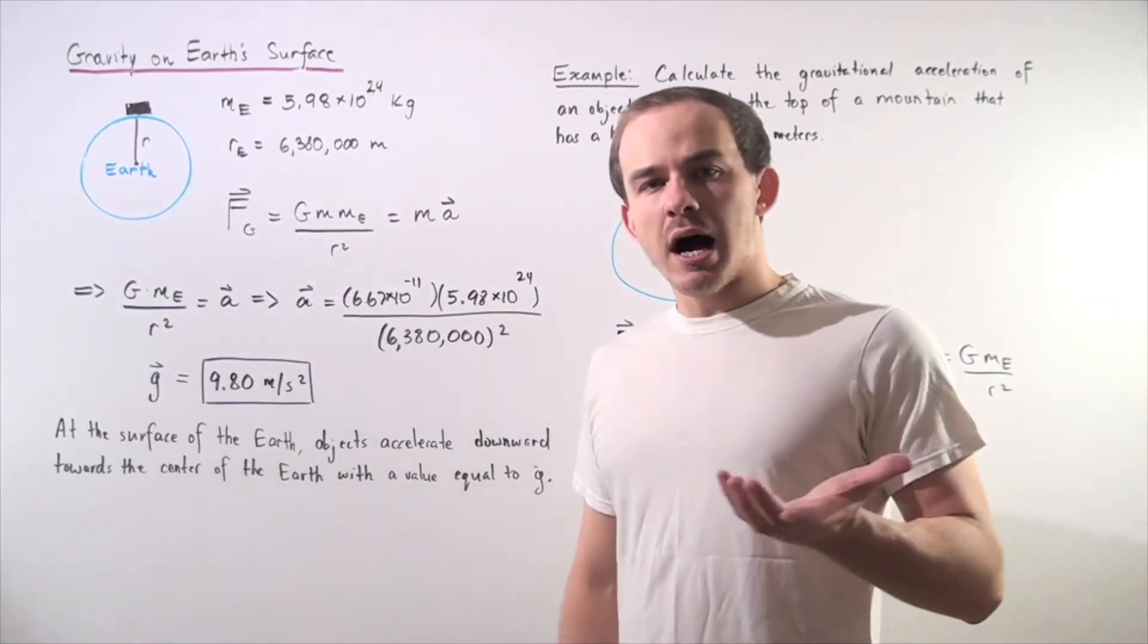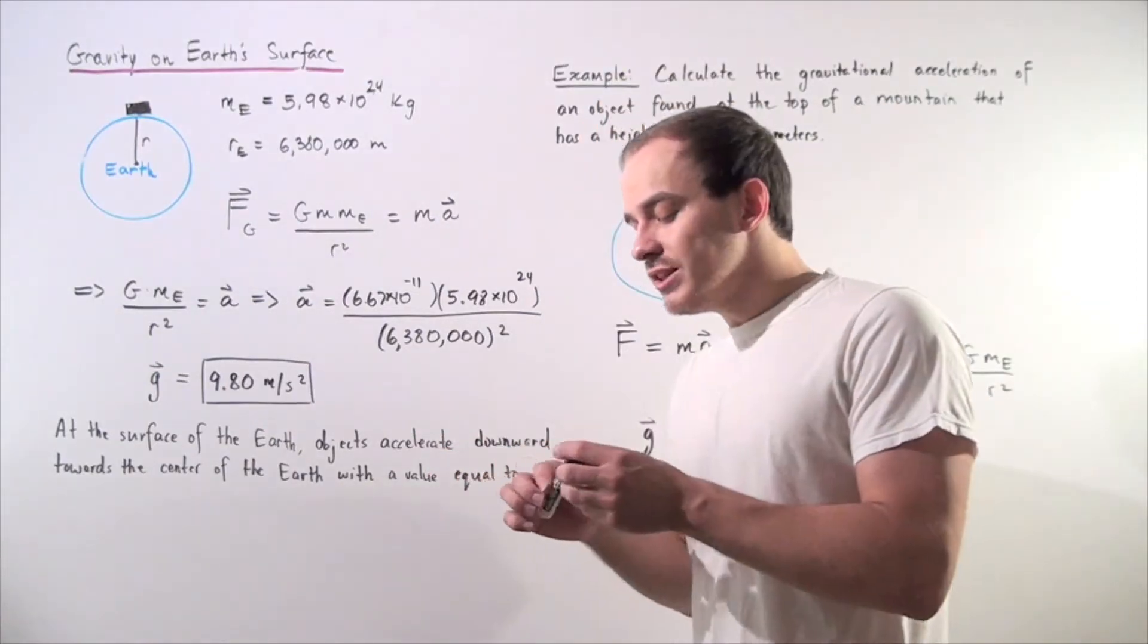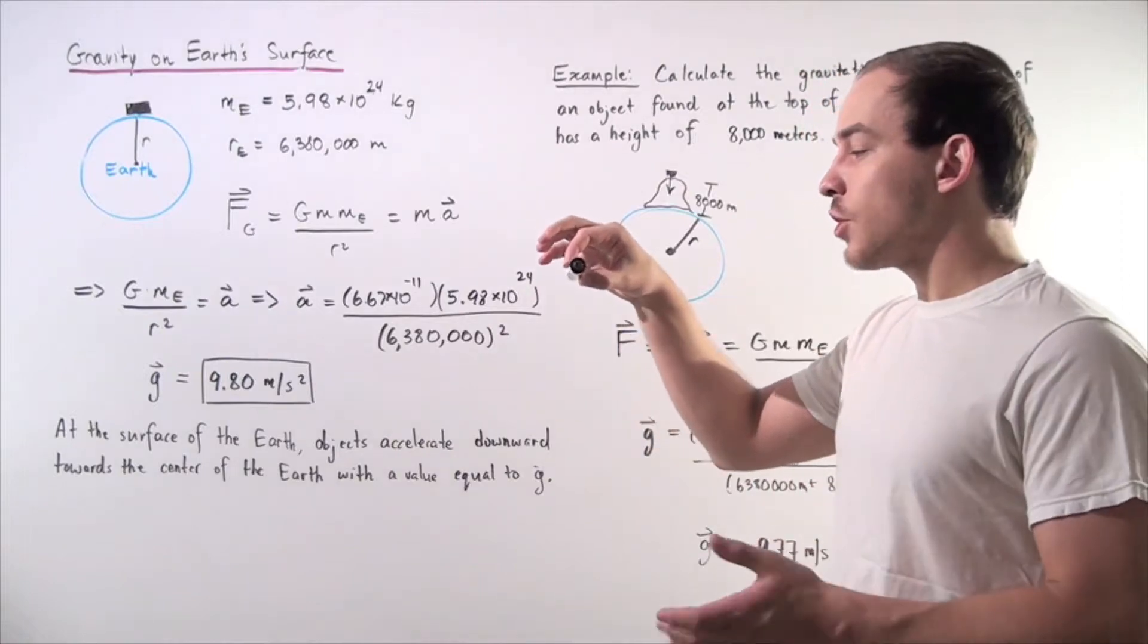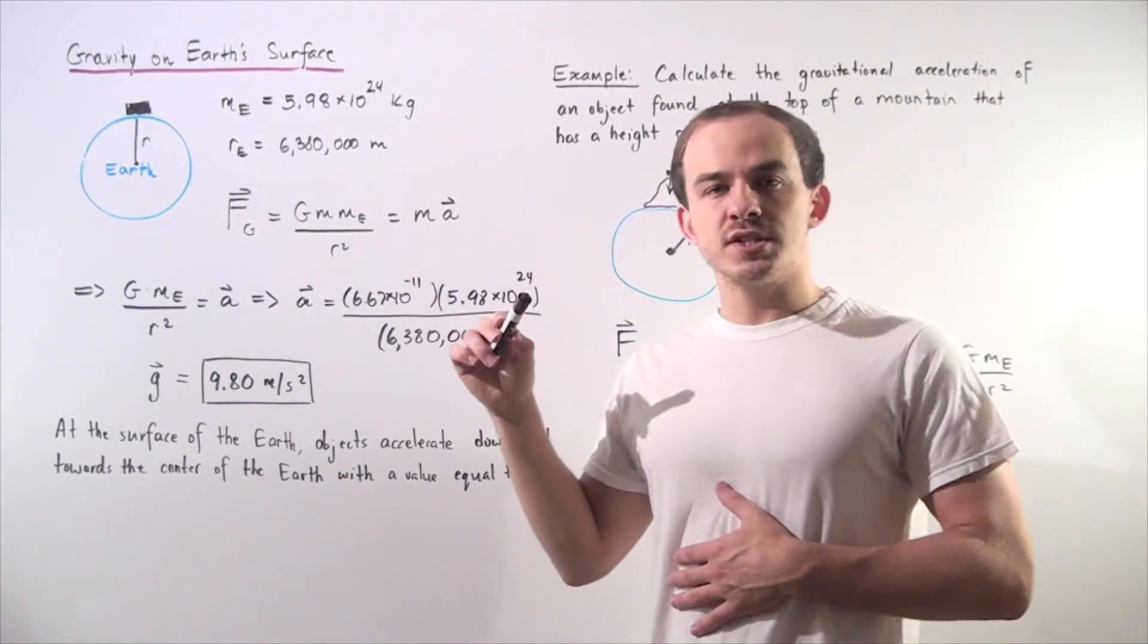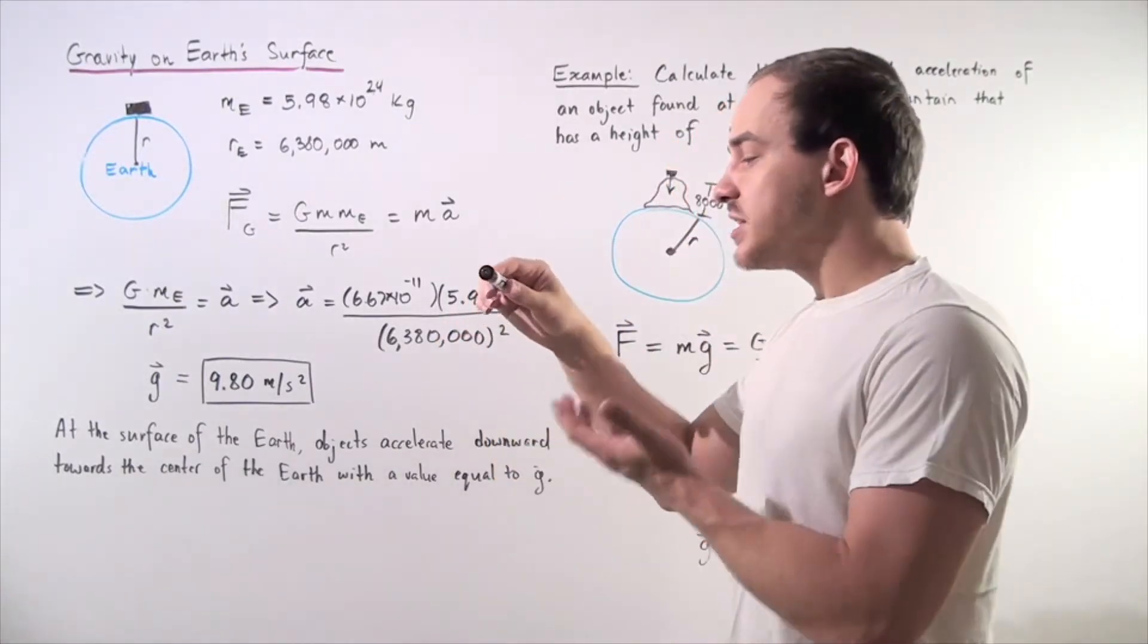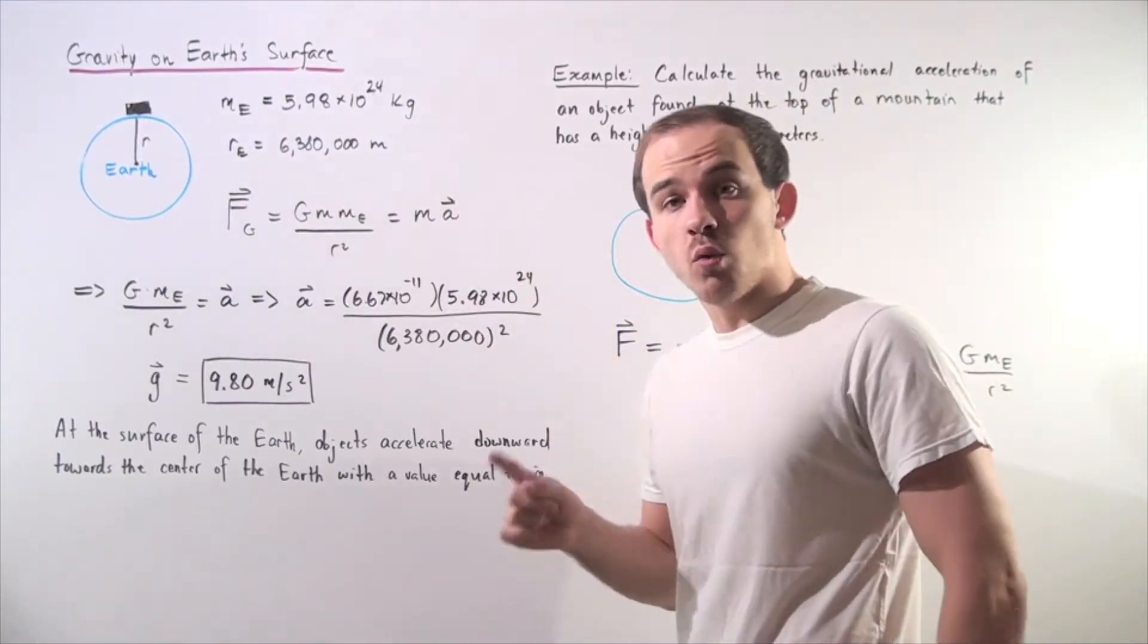So let's suppose that I take an object, let's say this marker, and I release it at the surface of the Earth, or very close to the surface of the Earth. The object, the marker, will accelerate downward to the ground. Why?